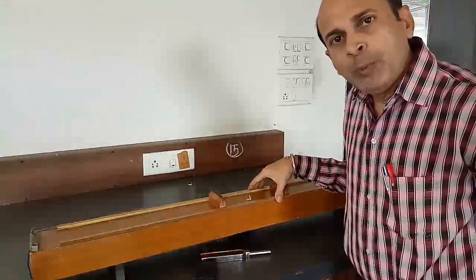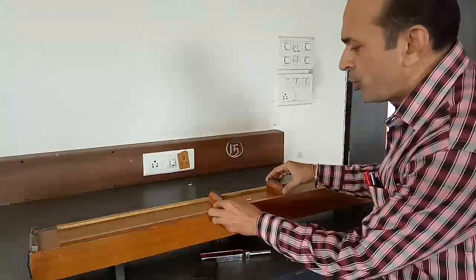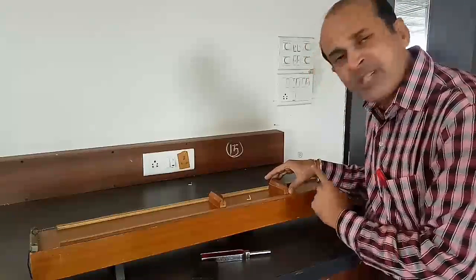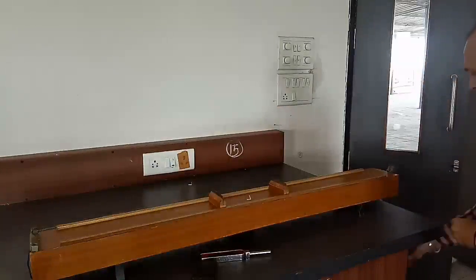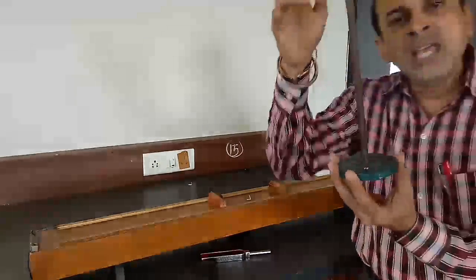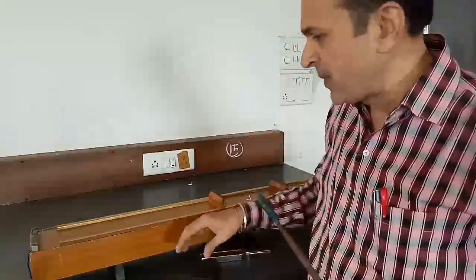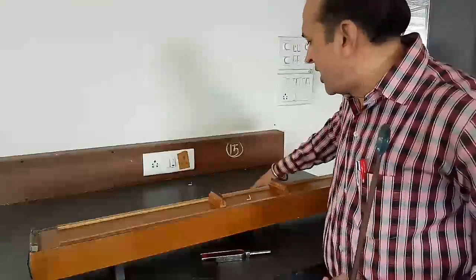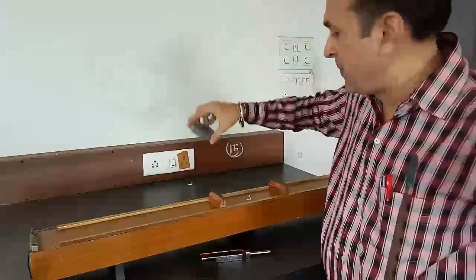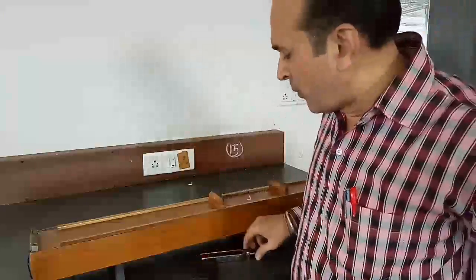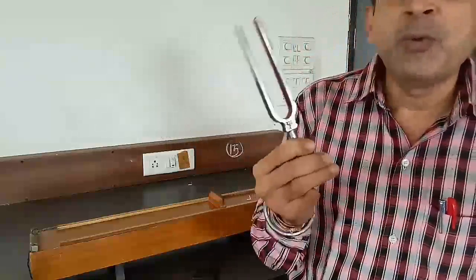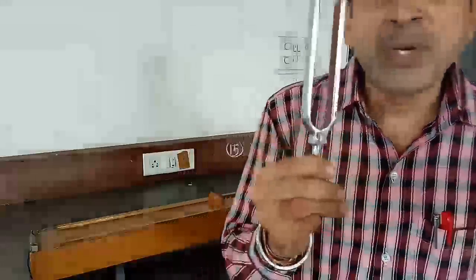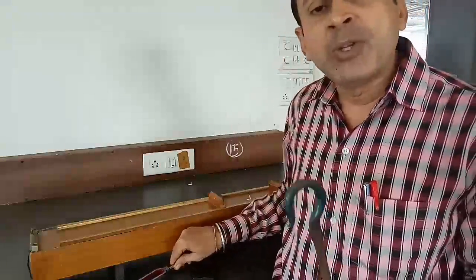This instrument is a sonometer having two supports; one support will be at 60 cm. Here we have hanged the hanger. This hanger is 0.5 kg and each additional weight is also 0.5 kg. Here we will keep the frequency constant. The tuning frequency of this tuning fork is equal to 320 Hz. The frequency is constant.